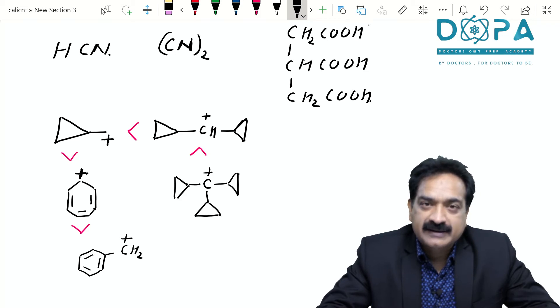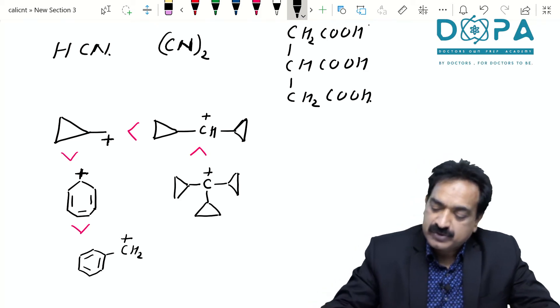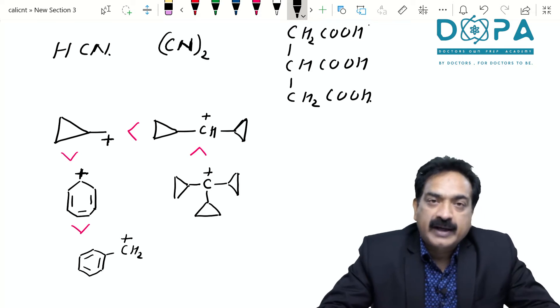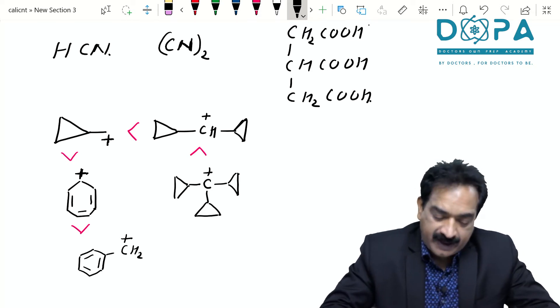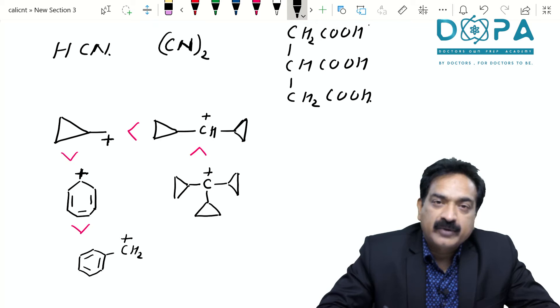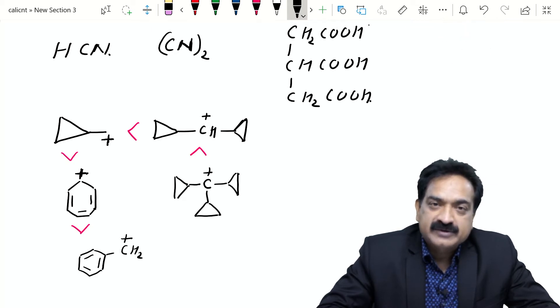Do you know the most stable carbocation is tricyclopropyl methyl carbocation? One of the most stable systems.